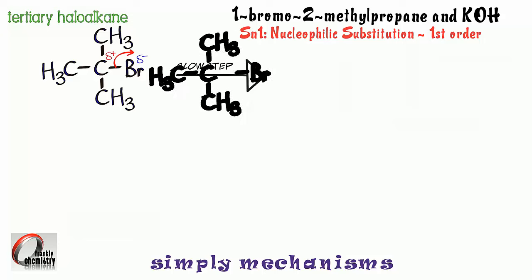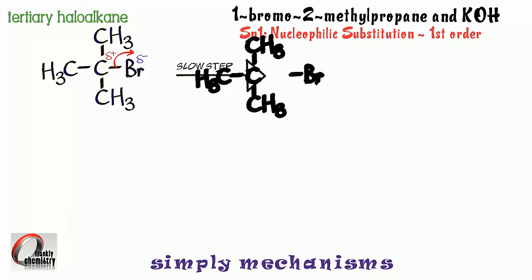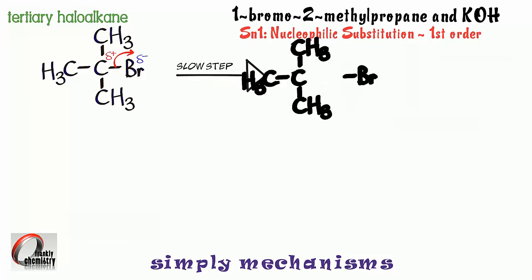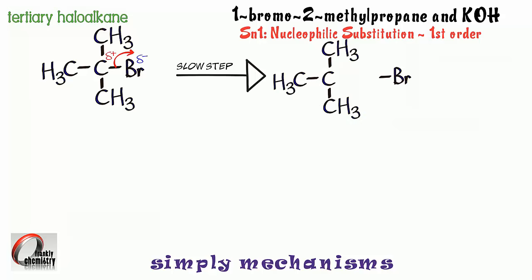And here's the intermediate that's forming. When that C-Br bond breaks in that way, heterolytically, the carbon loses the electron it contributed to the bond, so it's effectively down an electron, and I therefore need to show a positive charge on that carbon. And that's referred to as a carbocation.